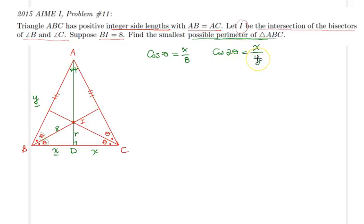Now using double angle formulas, we already know that cosine 2 theta is simply 2 cosine squared theta minus 1. And now we can go ahead and plug in our values for cosine theta and cosine 2 theta.